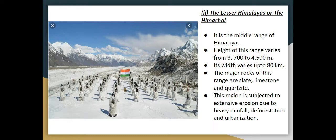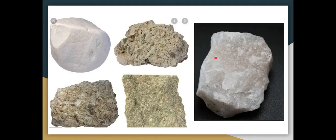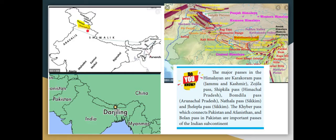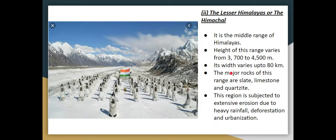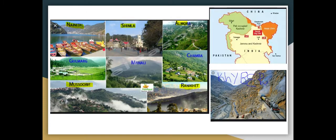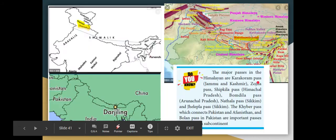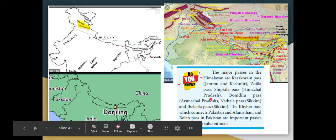In this region you can see extensive erosion due to heavy rainfall, deforestation, and urbanization. The major mountain ranges here are Pir Panjal, Dhaula Dhar, and Mahabharat. Major hill stations in the Lesser Himalayas include Nainital, Shimla, Almora, Ranikhet, and Darjeeling.